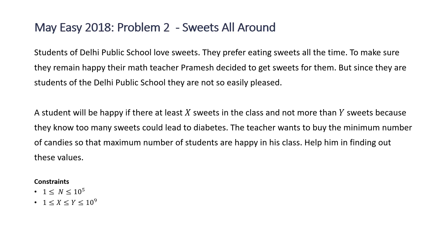The problem states students of Delhi Public School love sweets and prefer eating sweets all the time. To make sure they remain happy, their math teacher Pramesh decided to get sweets for them. A student will be happy if there are at least x sweets in the class and not more than y sweets, because they know too many sweets could lead to diabetes. The teacher wants to buy the minimum number of candies so that the maximum number of students are happy in the class.